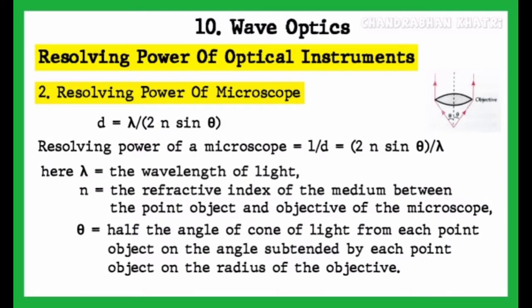Resolving power of microscope equals 1 upon d, that is, 2n sin theta upon lambda. Here, lambda is the wavelength of light, n is the refractive index of the medium between the point object and the objective of the microscope, and theta is half the angle of light from each point object — the angle subtended by each point object on the radius of the objective, as shown in this diagram.